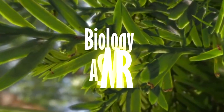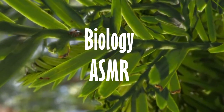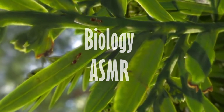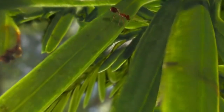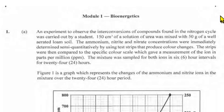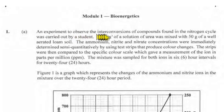Biology ASMR CXC is the best. What's up everybody, this is 2021 Unit 2 Paper 2 Biology ASMR. Question 1a: an experiment to observe the interconversion of compounds found in the nitrogen cycle was carried out by a student.